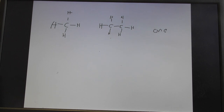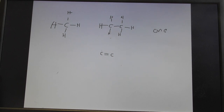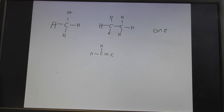Then we looked at the alkenes. What makes an alkene distinctive is a carbon-carbon double bond. You can't have just one member in that family — the minimum is two carbons, for the simple reason that you need a carbon-carbon double bond. There's no such thing as 'methene'; ethene is the first member. The smallest number of carbons possible in an alkene is two.